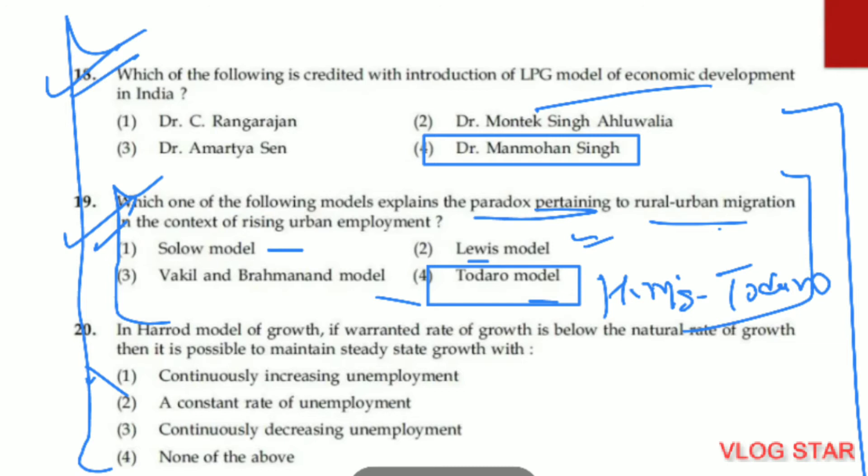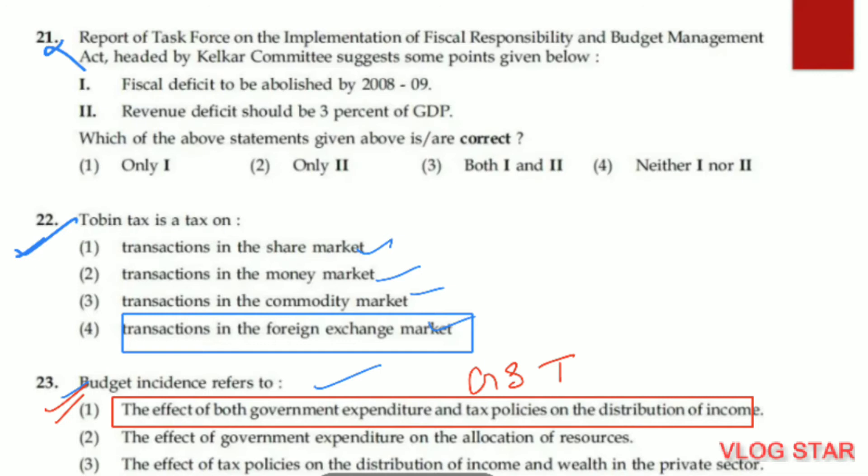Question number 20. In the Harrod model of growth, if the warranted rate of growth is below the natural rate of growth, it is possible to maintain a steady state of growth with continuously increasing unemployment — option one is correct. Question number 21. Both the first and second statements are correct — option three is the right answer.